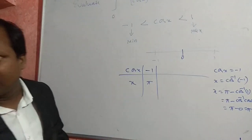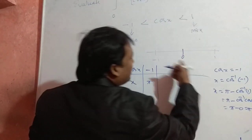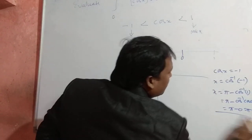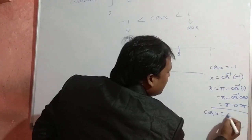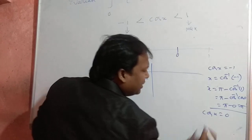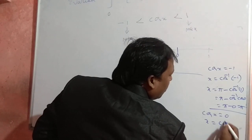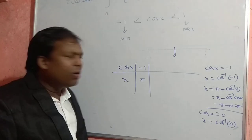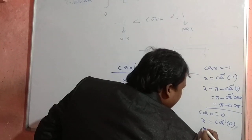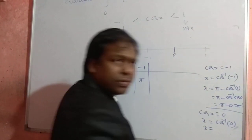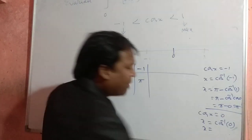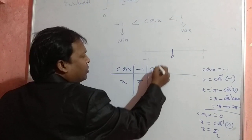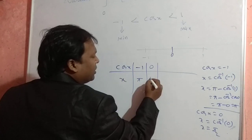Similarly, if cos x = 0, then x = cos⁻¹(0). The value of cos⁻¹(0) is π/2. So when cos x = 0, x = π/2.